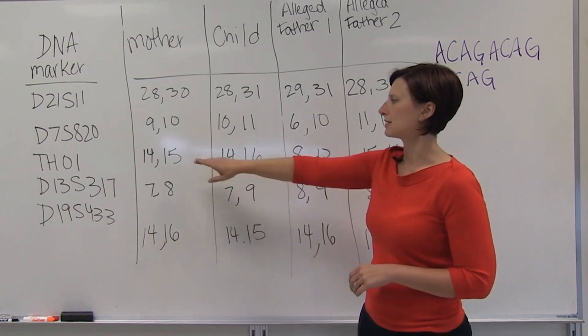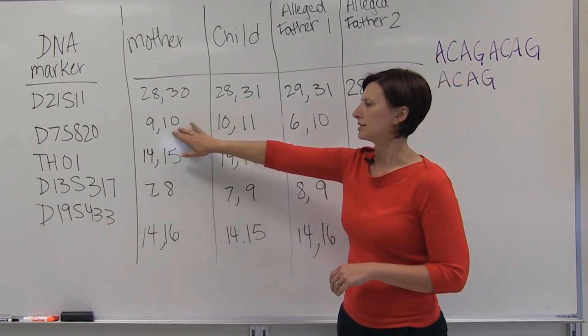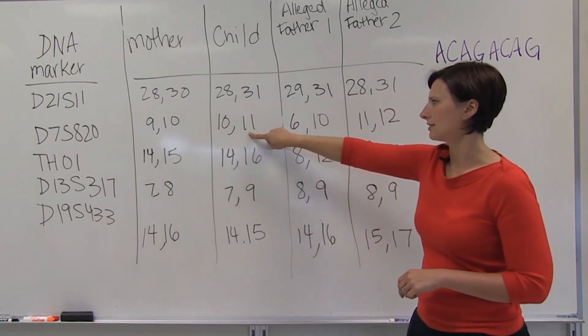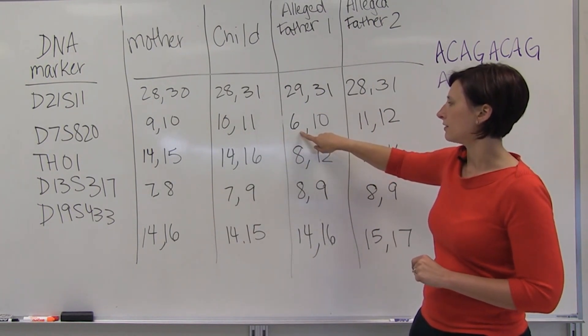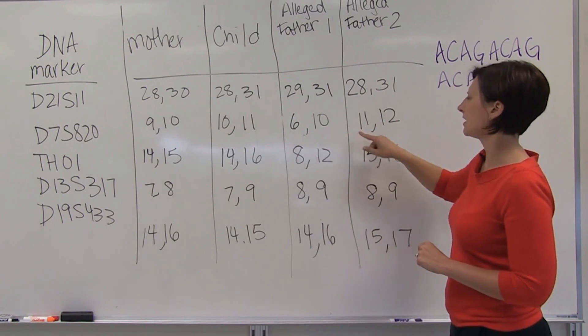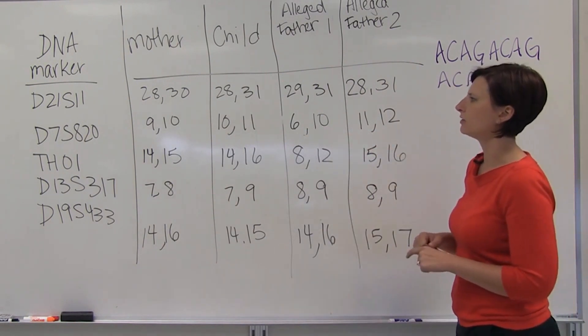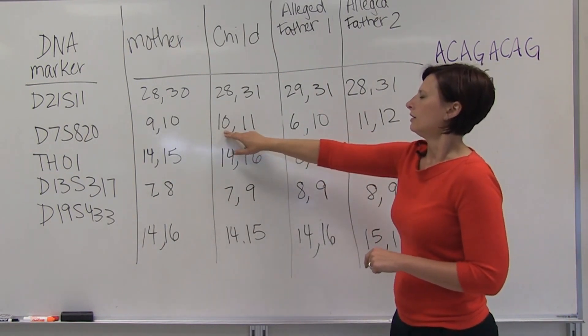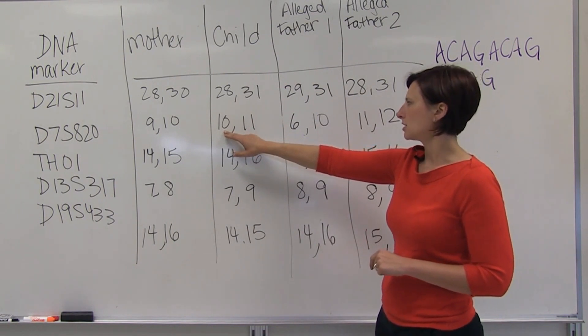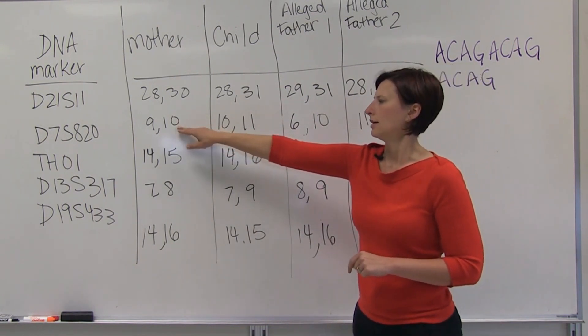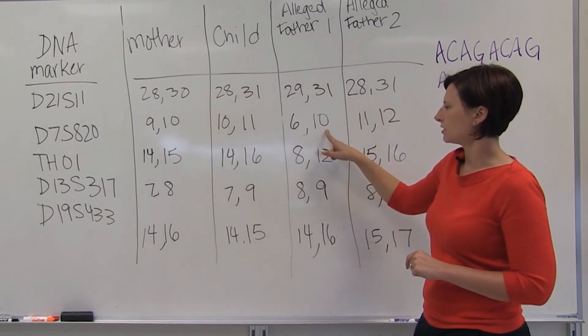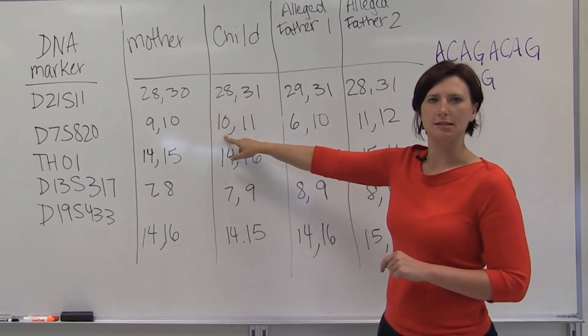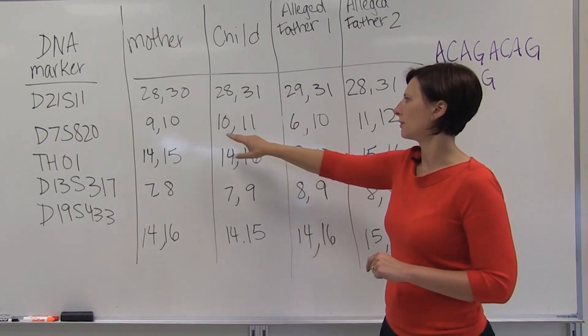So we look at the second locus. The mother is 9 and 10, the child is 10 and 11, the alleged father 1 is 6 and 10, and alleged father 2 is 11 and 12. The 10 that the child has has to have come from the mother, so this father can't have contributed the 10.